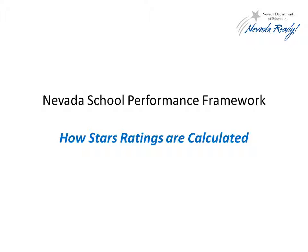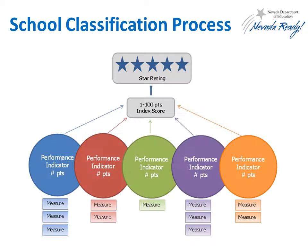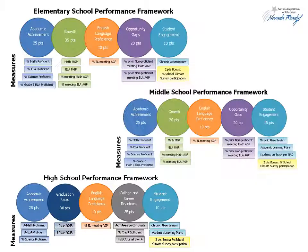In this NSPF video, we'll take a closer look at how star ratings are calculated within the Nevada School Performance Framework. Schools earn points in the framework for a number of different measures. These points roll up into a performance indicator score. Those scores are then added together to produce a total index score, which is then mapped to a star performance level.